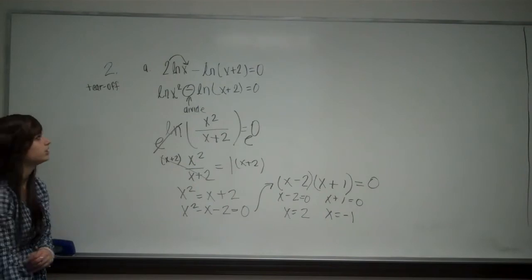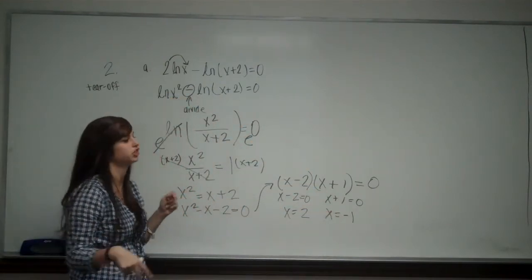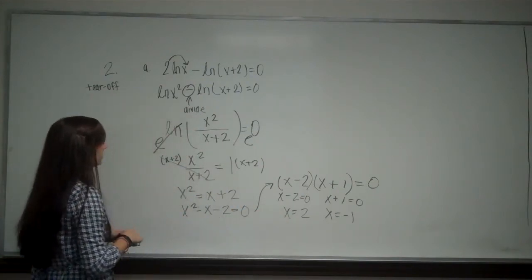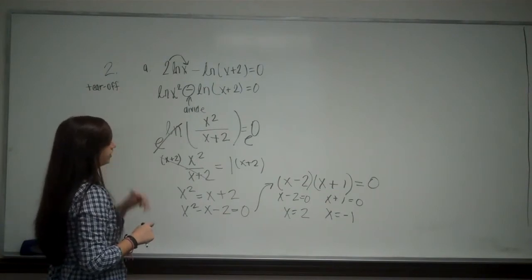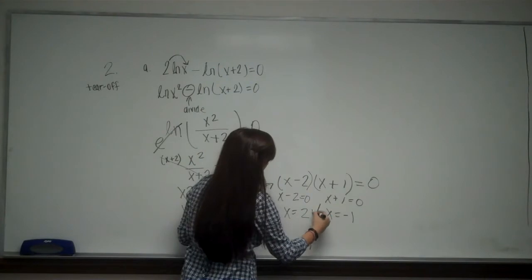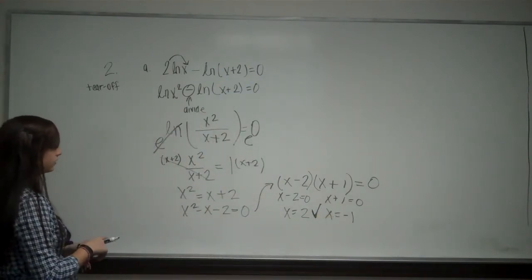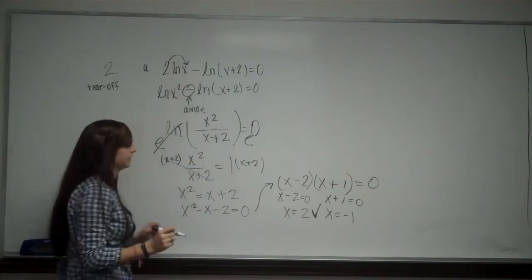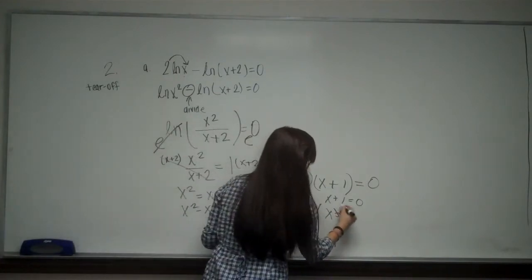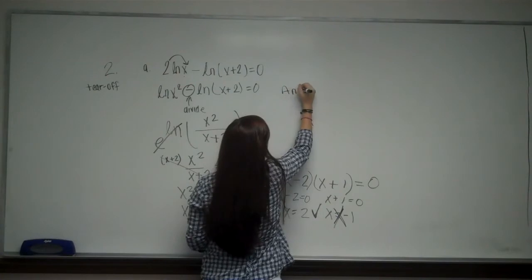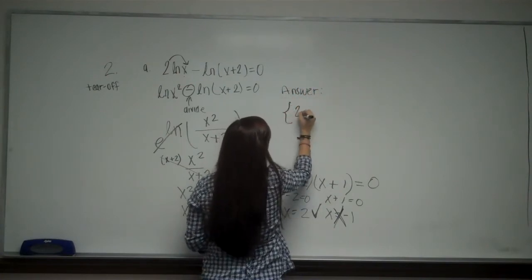It is important that we check our answers with natural log instead of just putting these two answers because we have a lot of restrictions. So if I plug in 2 back into this equation, everything is fine. It is in my domain and we are good there. So 2 works. But then if I plug in negative 1, I have natural log of negative 1. And I can't have a natural log of a negative number. So this does not work.